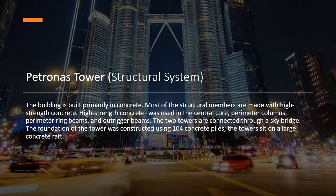Petronas Tower Structural System. The building is built primarily in concrete, with most structural members made of high-strength concrete — specifically 80 MPa concrete. High-strength concrete was used in the central core, perimeter columns, perimeter ring beams, and outrigger beams. The two towers are connected through a sky bridge, and the foundation was constructed using 104 concrete piles set on a large concrete raft.